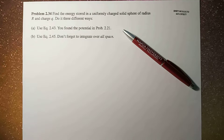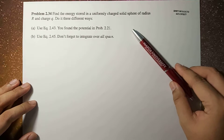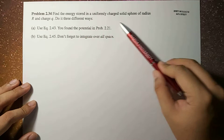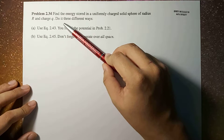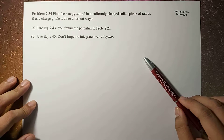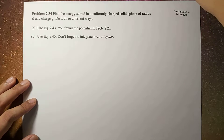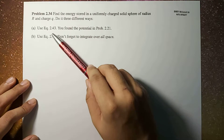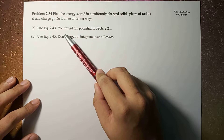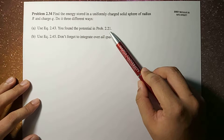What's up guys, it's me Sir Ernest, and today we're going to solve problem 2.34 letter A of Griffith's fourth edition. The problem reads: find the energy stored in a uniform charge solid sphere of radius R and charge Q, and do it in three different ways. In this video we're going to do letter A, and in the next video we're going to do letter B and letter C. For letter A, we're going to use equation 2.43 and the potential found in problem 2.21.